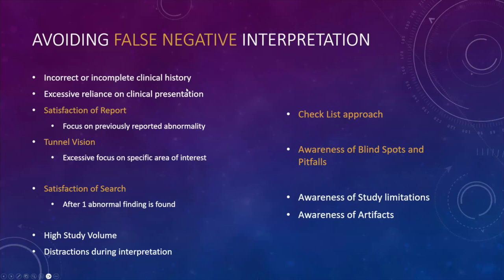Incorrect or incomplete clinical history is a common problem. Oftentimes the provided history may be misleading or may not give you the necessary information. A classic case: a surgeon recently asked me why we didn't report a parotid tumor on a brain study he ordered. It was on the edge of the study and the history just said 'dizziness.' Because we didn't have the relevant history and it was at the edge of the field, it was unfortunately missed by the radiologist — though fortunately it didn't impact patient care in this case.